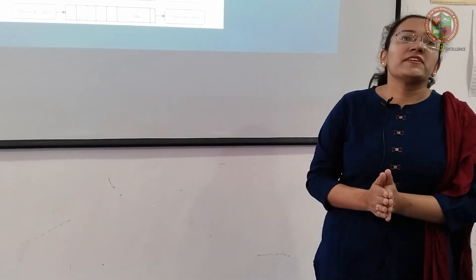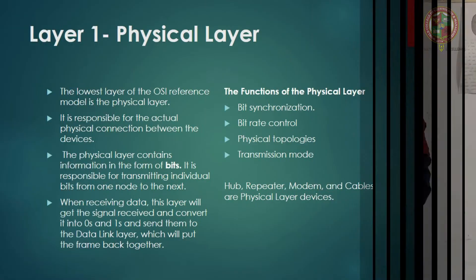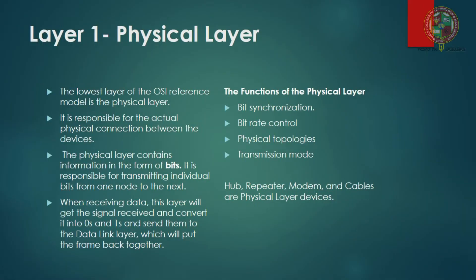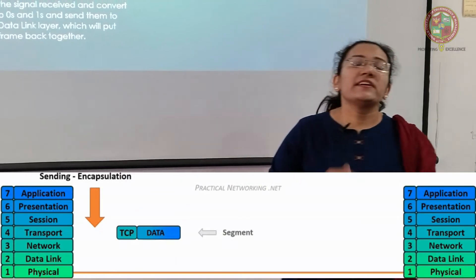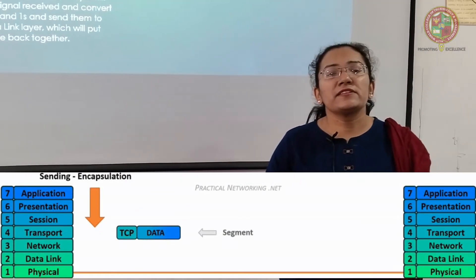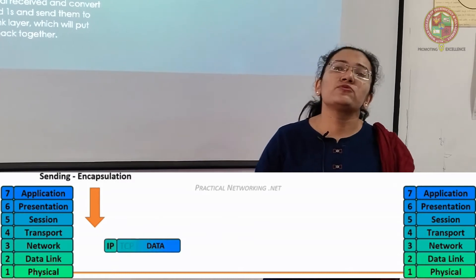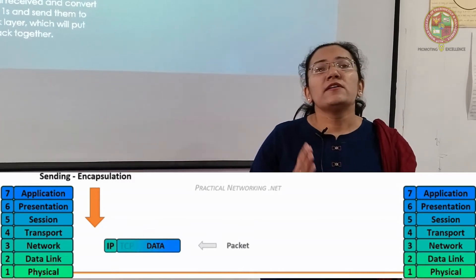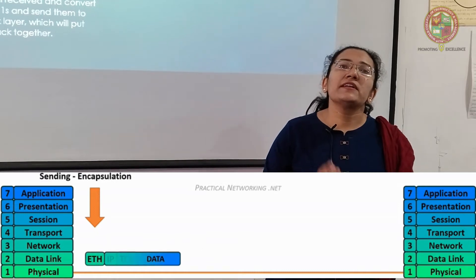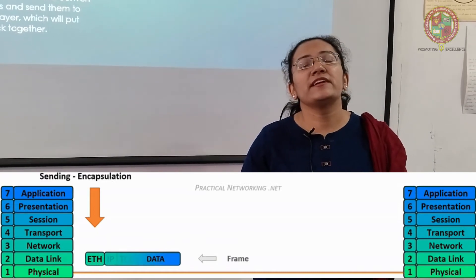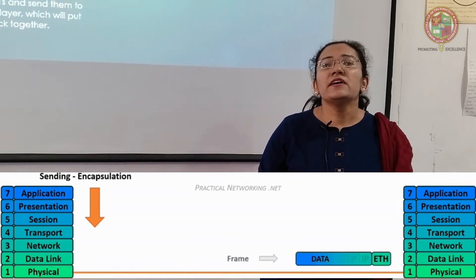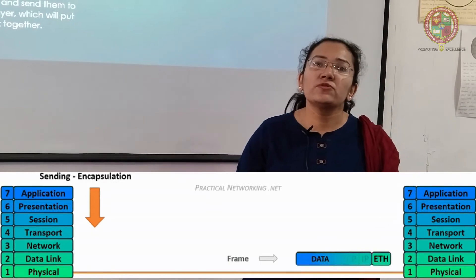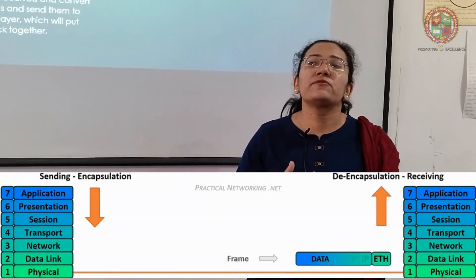The first layer is the physical layer, which is the bottommost layer of the OSI model. It is used to send data in a bit format — raw bits in 0 and 1 binary format. The devices used at the physical layer are the hub and repeater, which help transport data.